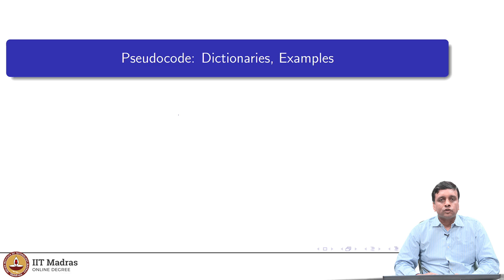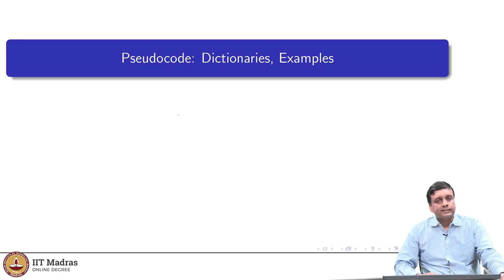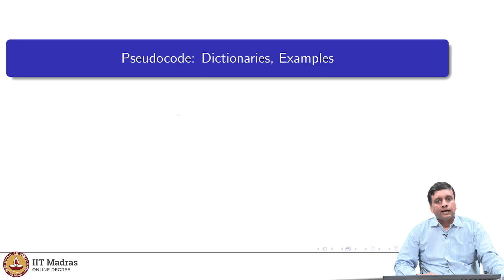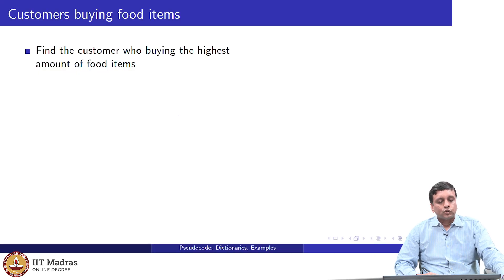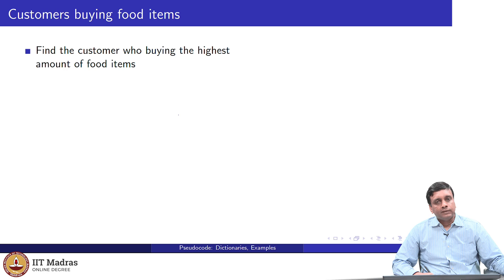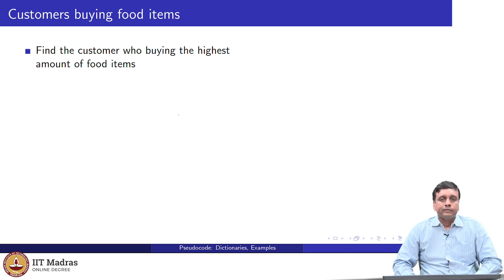Now that we have augmented our pseudocode with notation for dictionaries, let us work through some of the examples that we saw in class and see how it looks in terms of pseudocode. The first example we will look at comes from the shopping bills data. In the shopping bills data, we had item information about each shopping bill across customers and different shops.